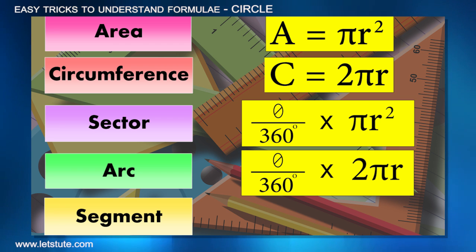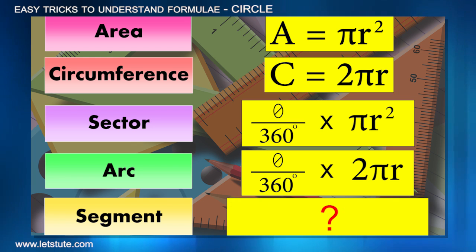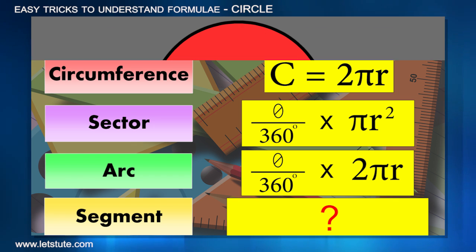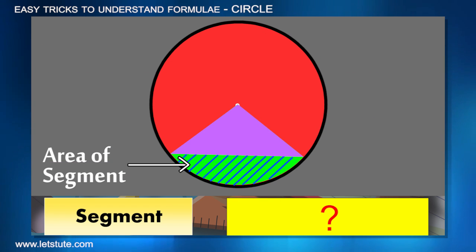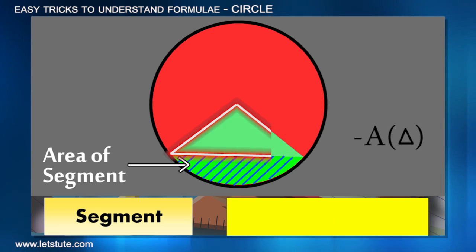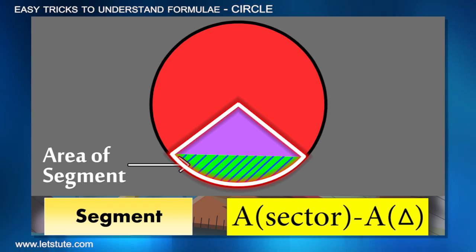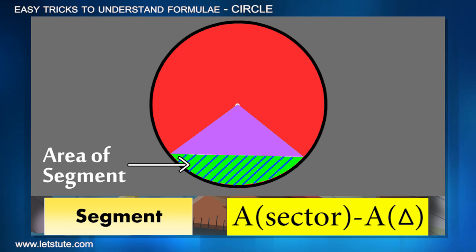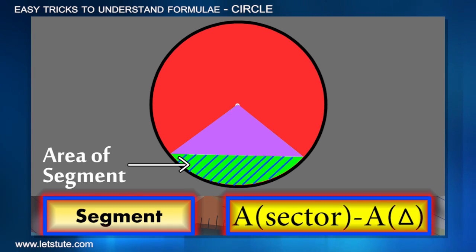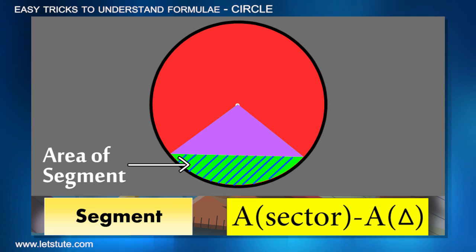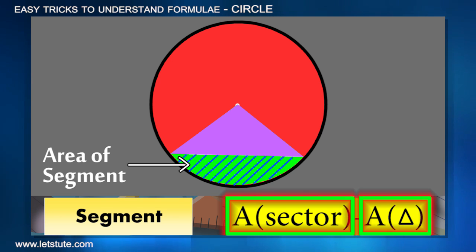One last formula as a departing gift: the formula to find the area of a segment. This is also very simple. We need to find the desired area by subtracting the area of the triangle from the area of the sector. By now, you know both formulas. This is really not a formula—we just combine two formulas. When we have such different combinations of shapes, we can use such differently combined formulas.